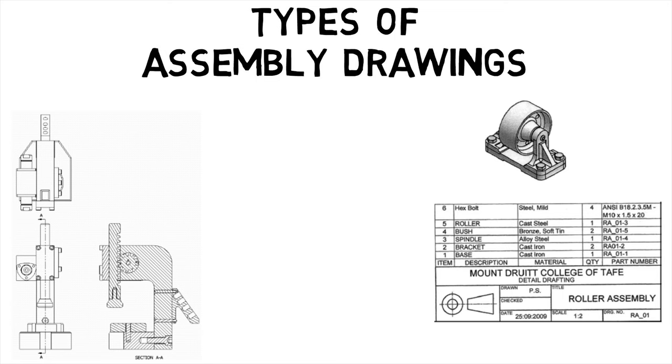The second type is working assembly drawing which is a combined detail and general assembly drawing. It fulfills the function of both types.